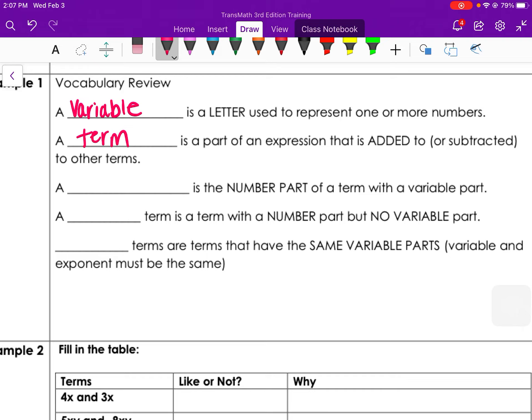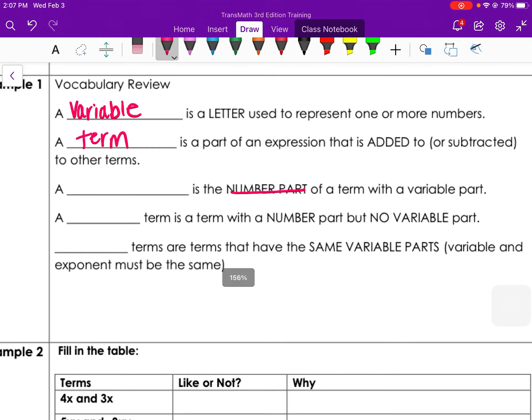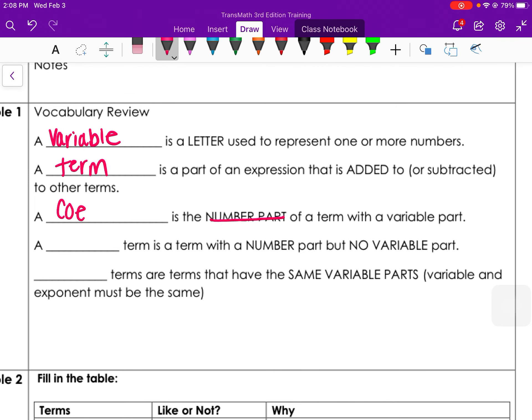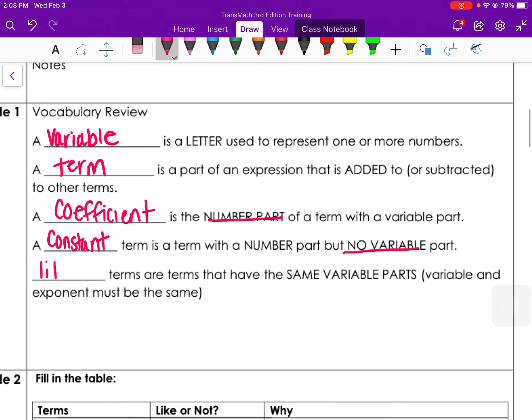A blank is a number part of the term with a variable part. So the number part is called the coefficient. A blank term is a term with a number part but no variable part. So that's a constant term. Blank terms are terms that have the same variable parts. Variable and exponent must be the same. Those are called like terms.